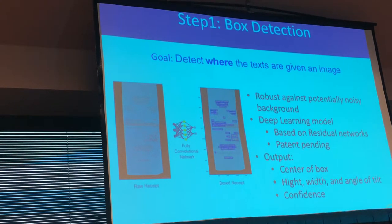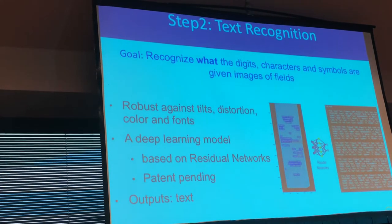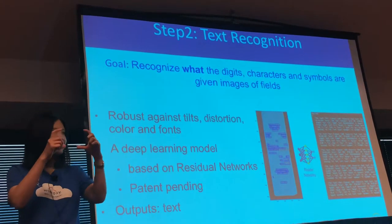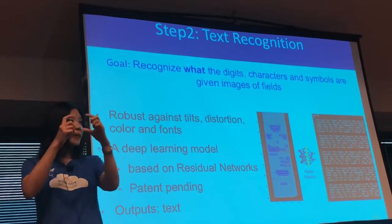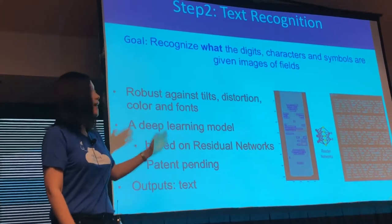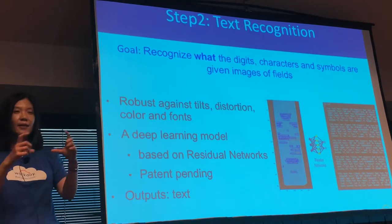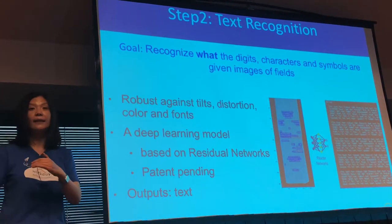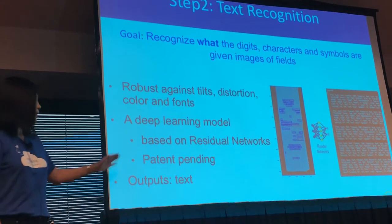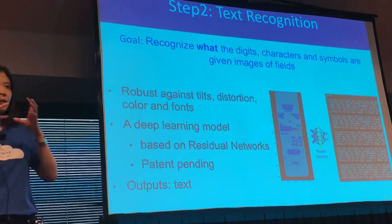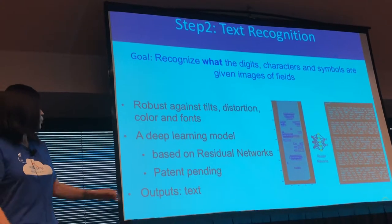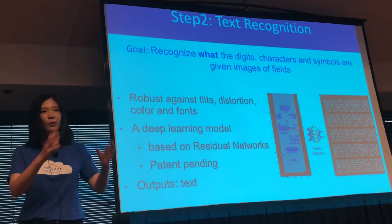After boxing all the text, Network 2 recognizes what's inside each box — whether it's a total amount, restaurant name, or hotel name. It takes each boxed region as input and returns all the text strings. This is another deep learning model based on residual networks, and again with our modifications we can do the job significantly faster than a regular residual network — we filed a patent for that as well. The output is all the recognized text and strings.